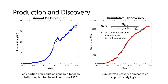Here's another view of production and discovery data. On the left is annual production, which does not fit the Hubbert bell-shaped model. On the right is the plot of cumulative discoveries — notice that it does seem to be S-shaped, or a logistic curve. The equation for the logistic function depends on three variables or parameters. The most important one is D-total, which represents the maximum of cumulative discoveries. Using standard curve-fitting techniques, we can estimate these parameters and see how well they fit the data.